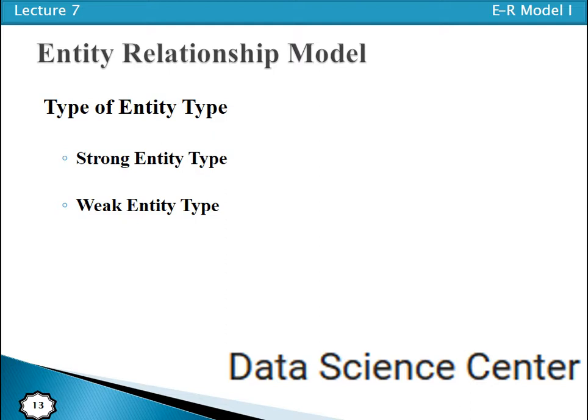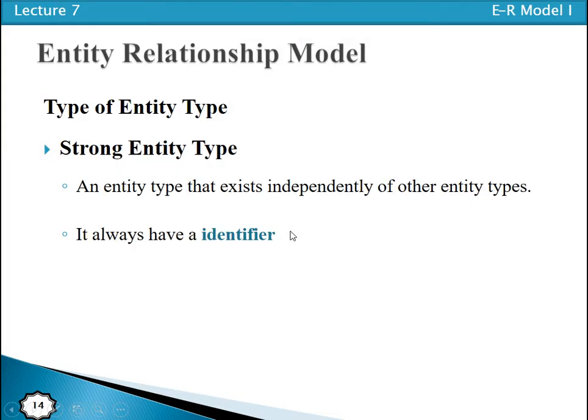The first type is strong entity and the second is weak entity. A strong entity type is an entity type that exists independently of another entity type. When we have an entity type that exists independently of any other entity type, that is called a strong entity type.